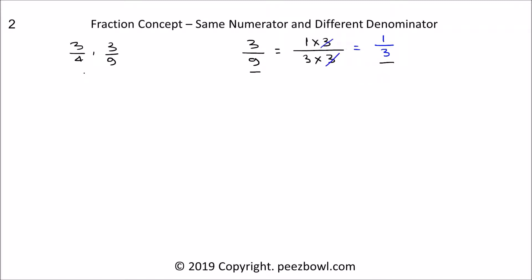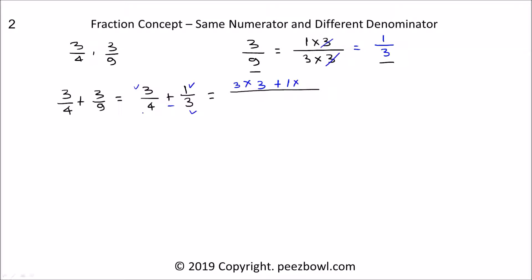So 3 upon 9 can be written as 1 upon 3 — both have the same value. So let us add these two fractions: 3 upon 4 plus 3 upon 9 is equal to 3 upon 4 plus 1 upon 3. At the numerator place, we multiply the first fraction's numerator with the second fraction's denominator, that is 3 multiplied by 3, then add the multiplication of the second fraction's numerator 1 with the first fraction's denominator 4. The denominator is 4 multiplied by 3. So 3 multiplied by 3 is 9, plus 1 multiplied by 4 is 4, divided by 4 multiplied by 3 is 12. The result of this addition is 13 upon 12.